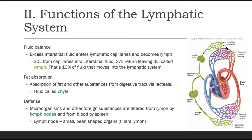Ten percent of that fluid moves from the interstitial tissue into the lymphatic capillaries. We have 30 liters from the capillaries moving into the interstitial tissue, becoming interstitial fluid. Twenty-seven liters move back into the capillary, so 3 liters move from the interstitial tissue into the lymphatic capillaries. At that point, we change the name from interstitial fluid to lymph once it enters these capillaries.